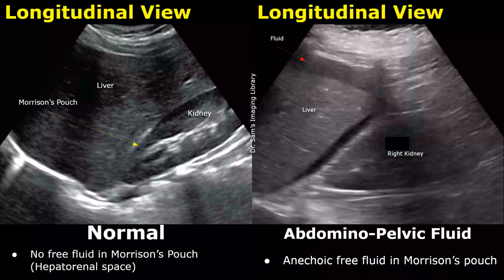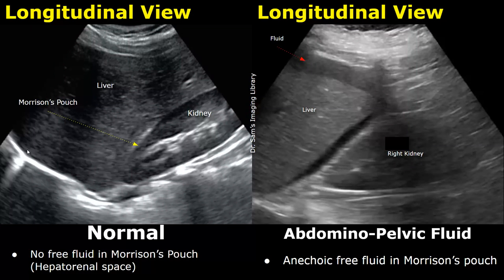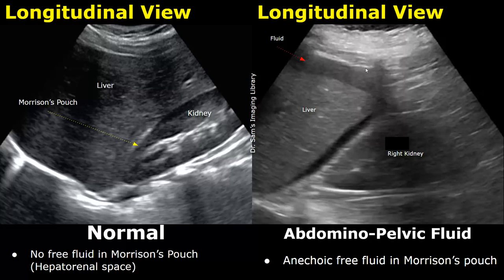Now we move down to the right upper quadrant to scan the space between the liver and the right kidney, which is called Morrison's pouch or the hepatorenal space. Normally, no anechoic free fluid will be seen between the liver and kidney in this longitudinal view. Here is an image of abdominal pelvic fluid in a patient with trauma.